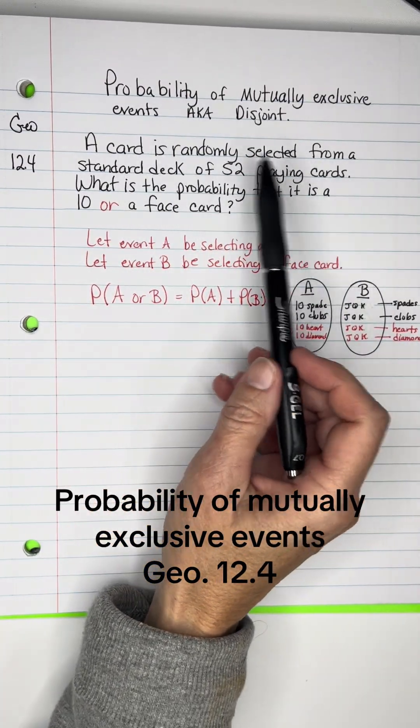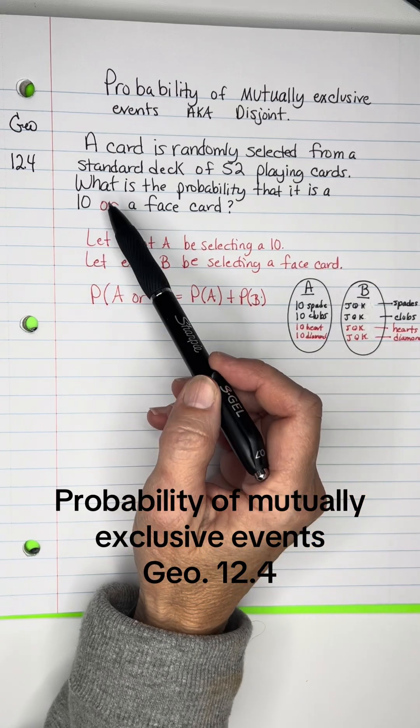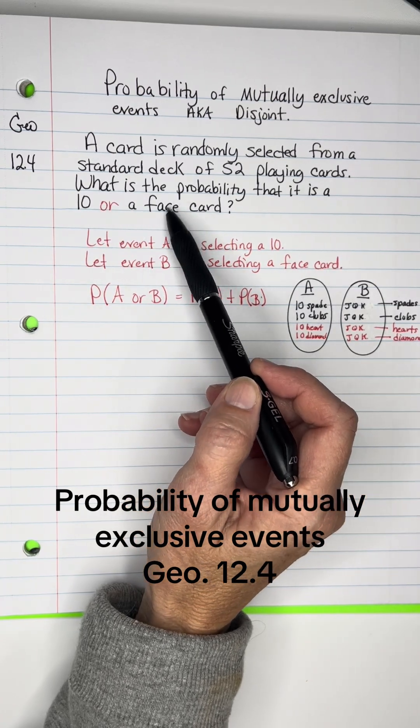A card is randomly selected from a standard deck of 52 playing cards. What's the probability that it is a 10 or a face card? The word 'or' is important there.